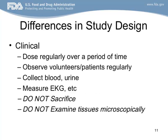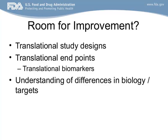But in the clinic, in a clinical trial, patients may be dosed regularly over a period of time. In Phase I trials, you look at volunteers or patients regularly, collect blood and urine, and take measurements such as EKG. But there is no concept of sacrificing the experimental system and examining tissues microscopically. So there are differences in how studies are conducted, and there's room for improvement in making study designs more translational.